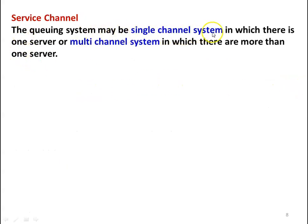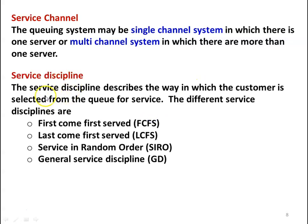Service channel: the queuing system may be a single-channel system with one server, or a multi-channel system with more servers. For example, an ATM machine is a single-channel system; a barber shop with two or three chairs, or a railway reservation counter with three counters, is a multi-channel system. Service discipline describes how customers are selected from the queue for service: FCFS (first come, first served), LCFS (last come, first served), SIRO (service in random order), or GD (general discipline). The majority of cases use FCFS.